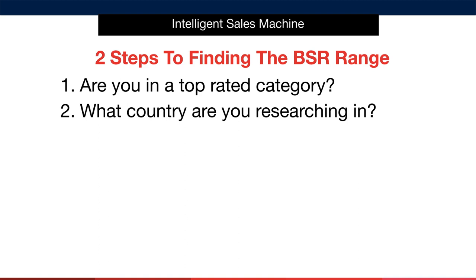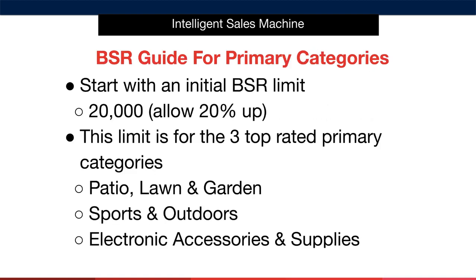To find the BSR limit, you'll initially ask yourself two questions. Question one: is this item located in a primary category? And question two: what country am I researching in? Once we know the answers, and I'll give you a list of top-rated categories in a moment, you'll have a base BSR limit.